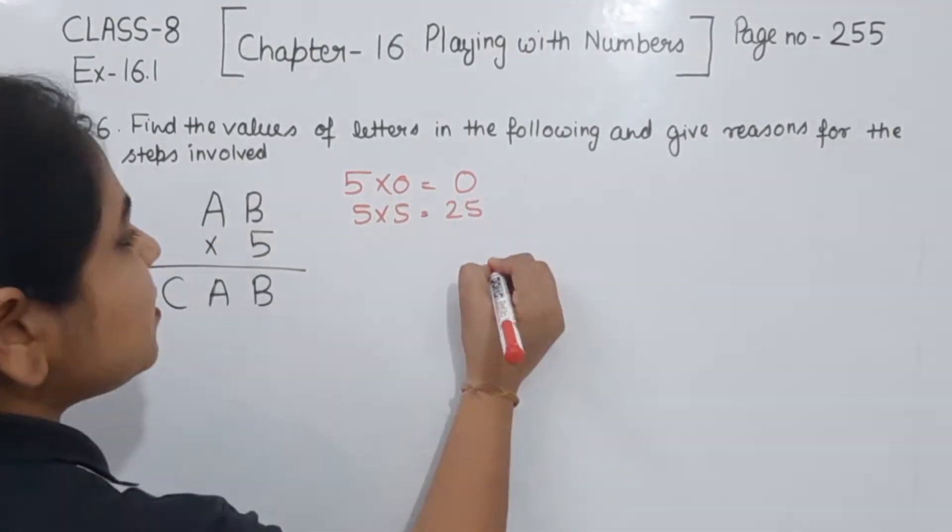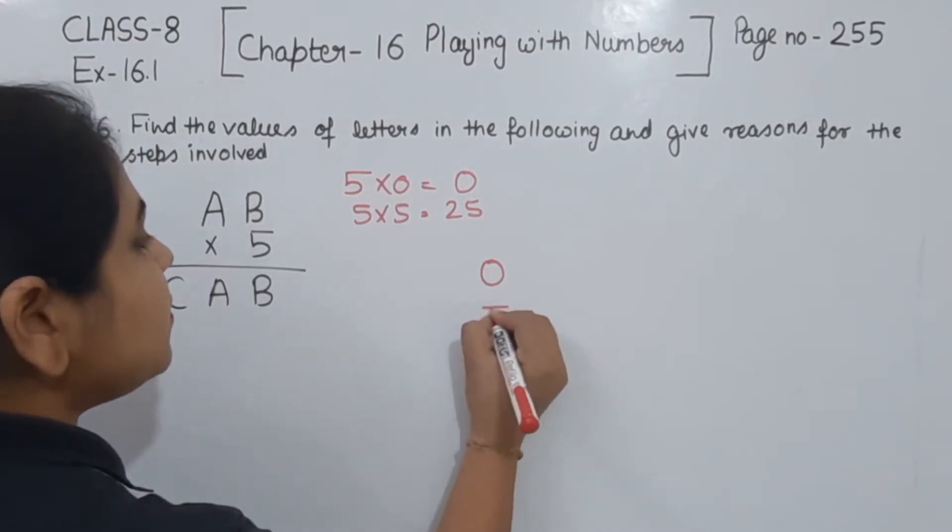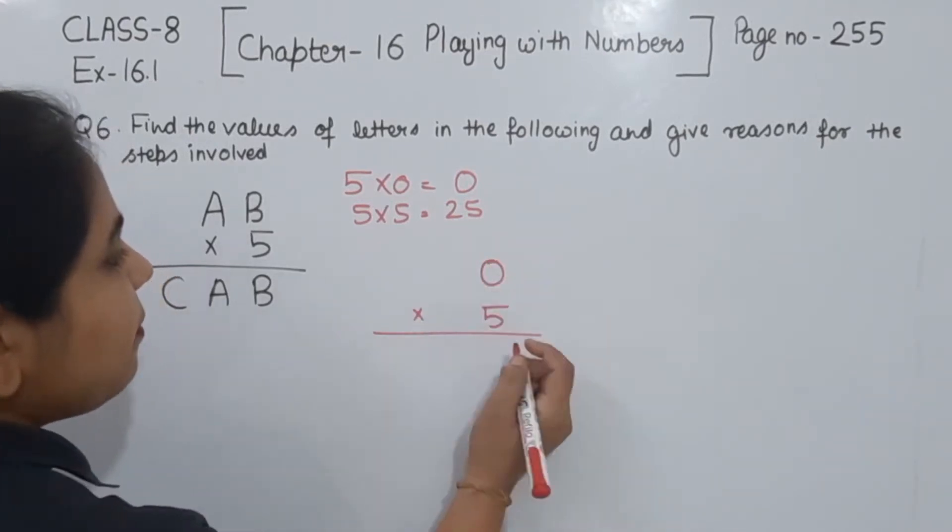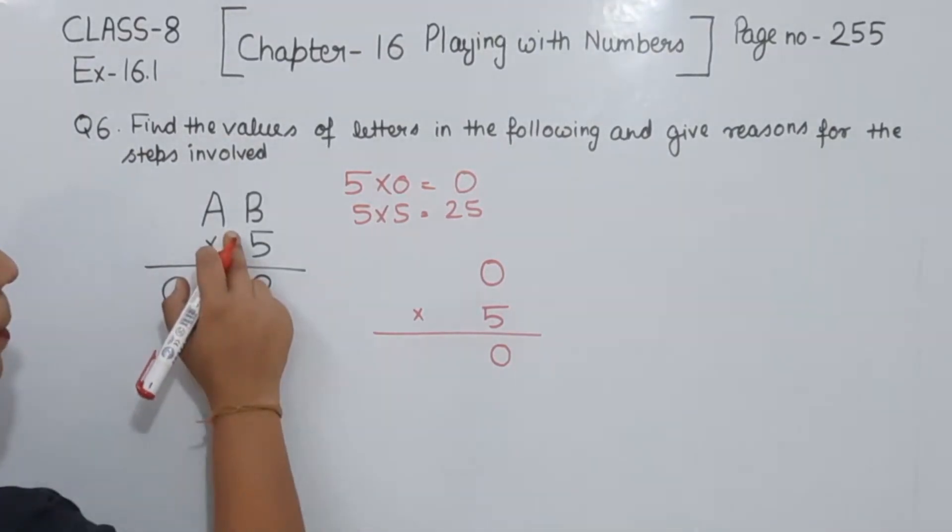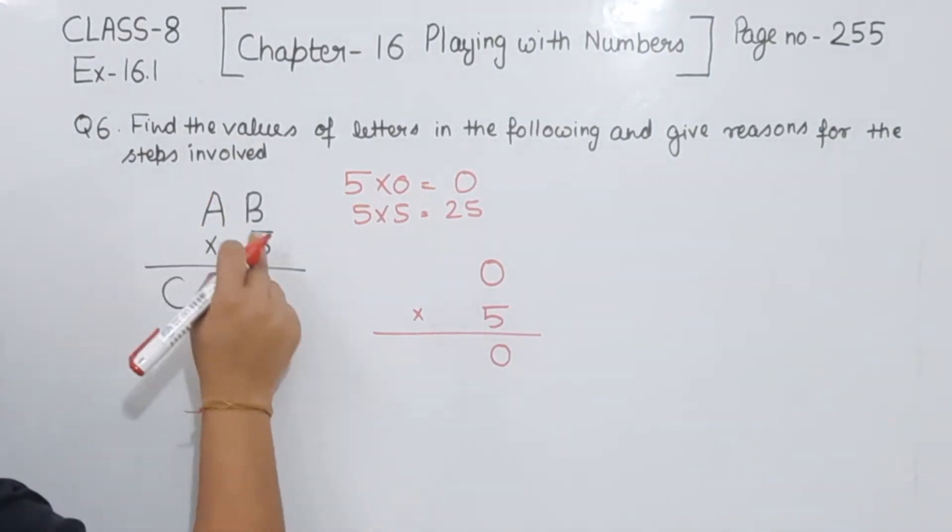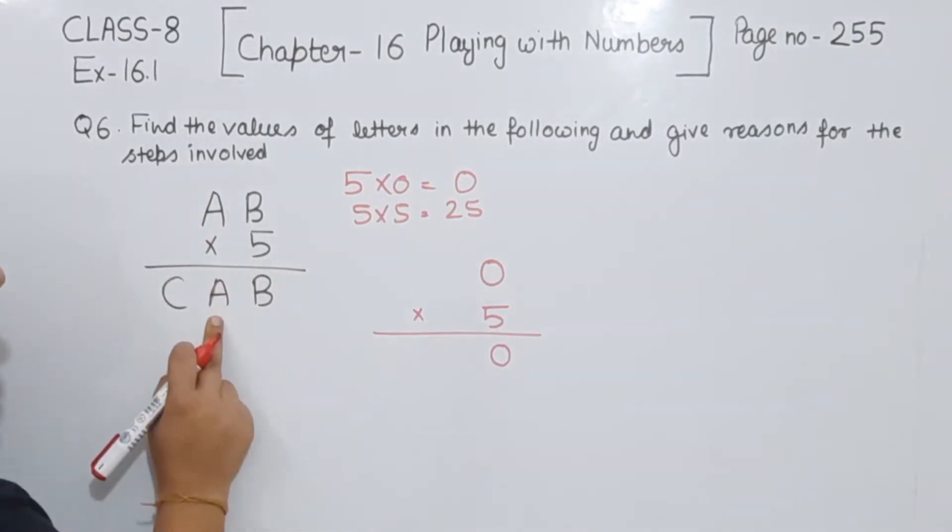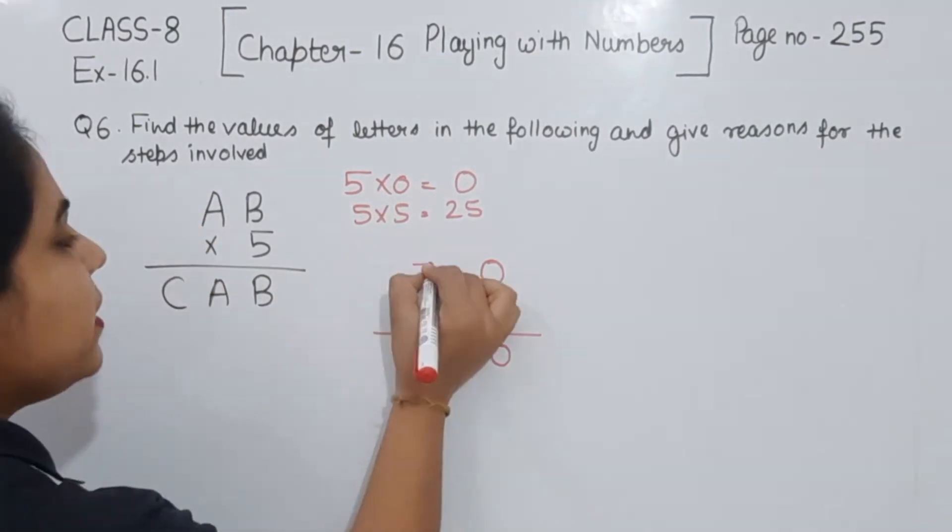Here at the case of B, I am taking 0. So if I am going to multiply 0 by 5, I will have 0 here. Now I should have a number here that if I am going to multiply by 5, I am going to get the same number here. So I am going to take this one as 5.